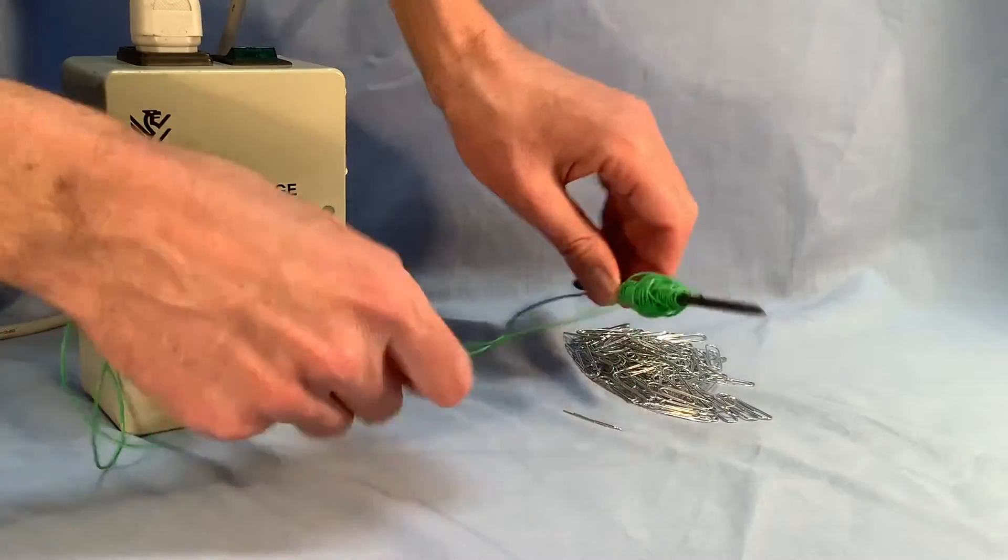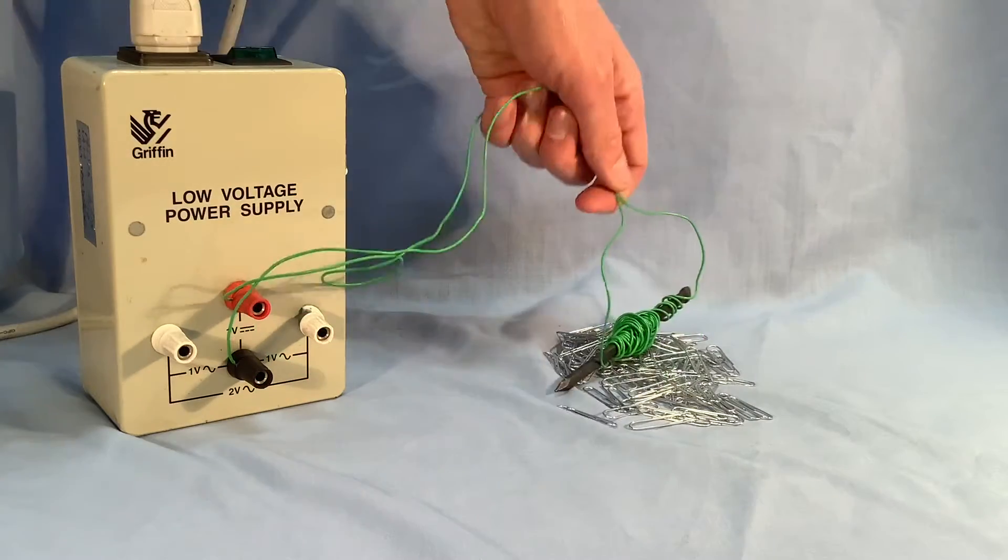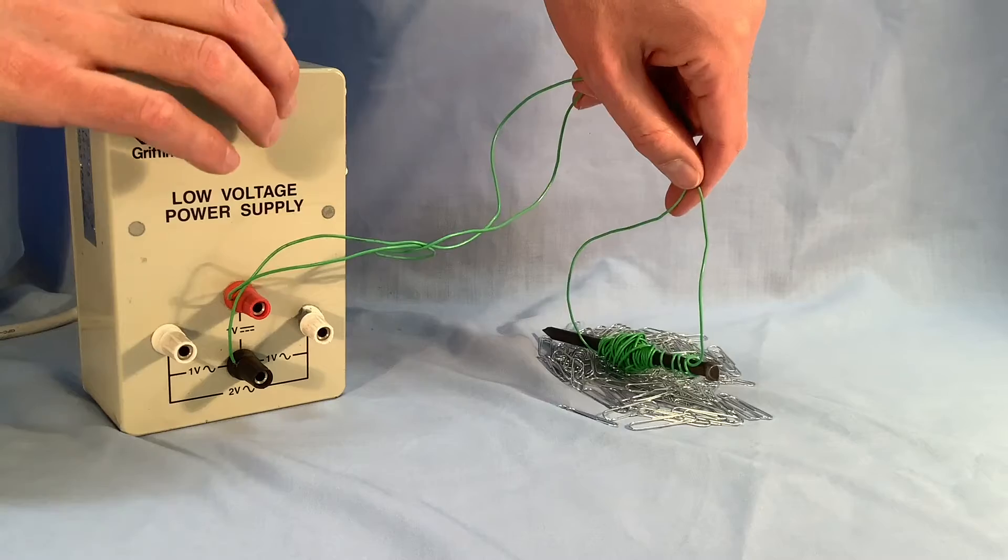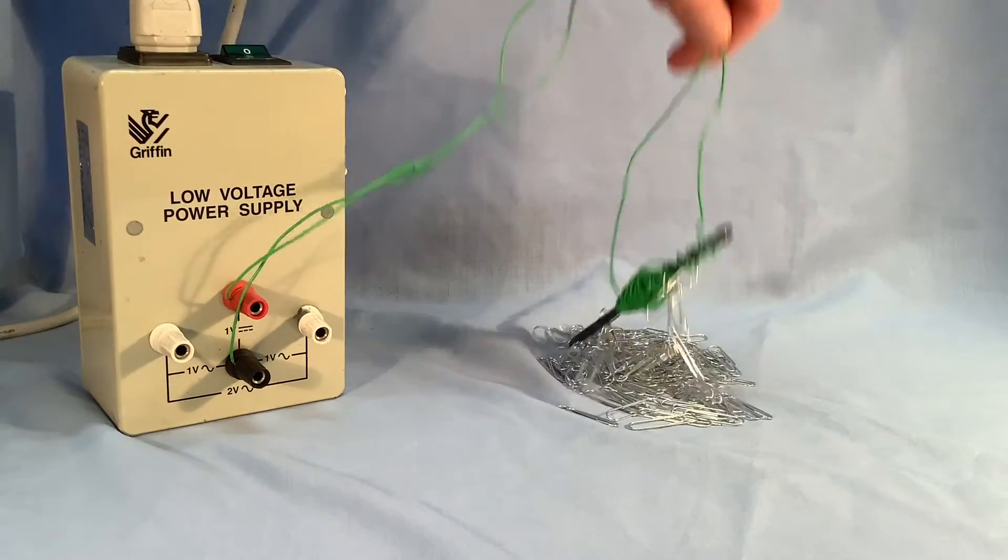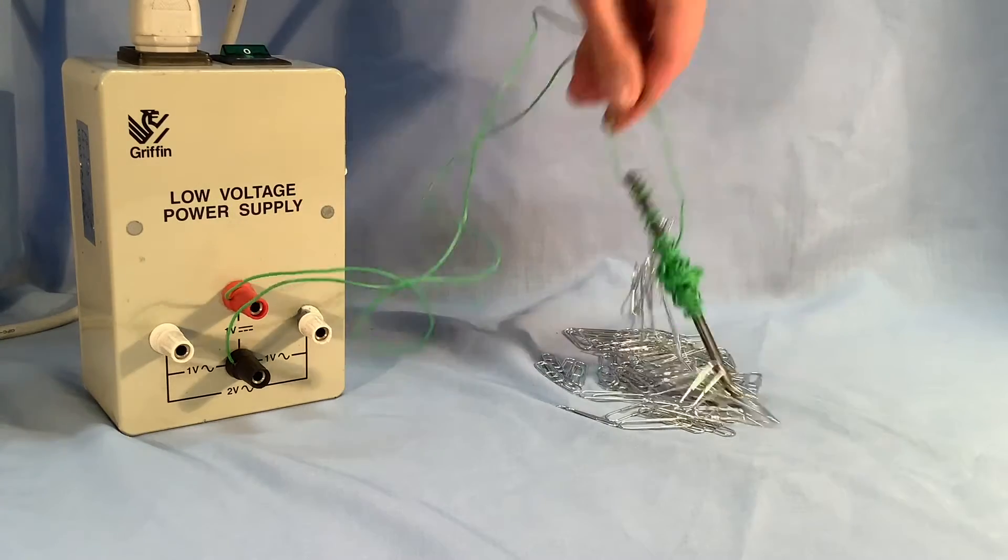And now, first of all, with the power supply switched off, no paper clips being attracted. Now pop the power supply on, and we can see lots of paper clips getting attracted.